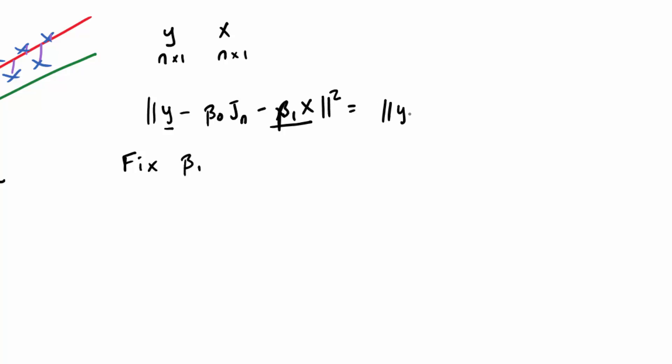So we can just write this, y minus beta 1 x minus beta naught jn. If I think of that as a single vector, then this is just mean only regression, and we know that the solution for beta naught has to be the average of this vector right here.